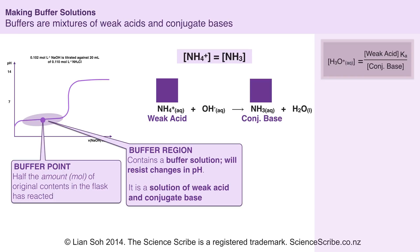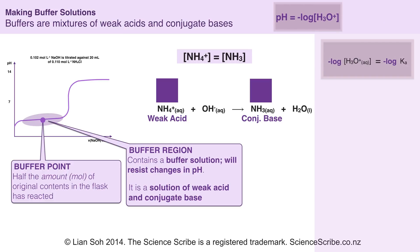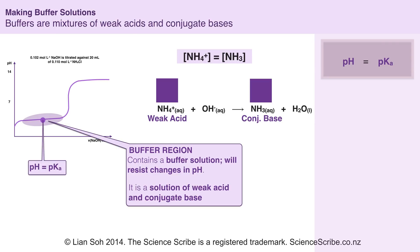Now in a different video on buffer solution pH we derived this formula which will always tell us the concentration of hydronium ions in a buffer solution. My weak acid is ammonium and my conjugate base is ammonia. Since they are the same concentration, it's like taking the same value and dividing it by itself — this just comes out to be one. So weak acid divided by conjugate base equals one, meaning H3O+ equals Ka. If I take the negative log of both sides, on the left I get pH, and on the right — since pKa equals negative log of Ka — I get pKa. This means that at the buffer point my pH is just equal to pKa.